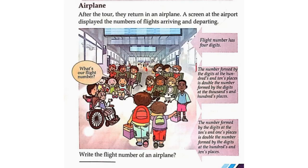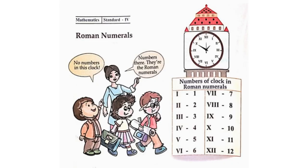Airplane: After the tour, they returned by aeroplane. A screen at the airport displayed flight numbers. What is a flight number? It has four digits. The number formed by the digits at hundreds and tens place is double the number at thousands and hundreds place. Similarly, tens and ones is double hundreds and tens. The flight number is 1,248 — that is 1, 2, 4, 8.